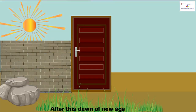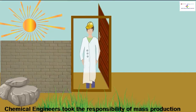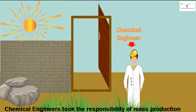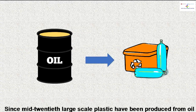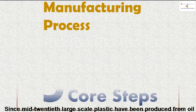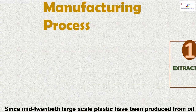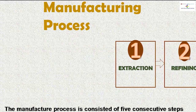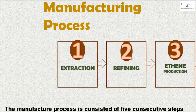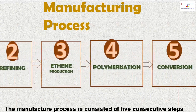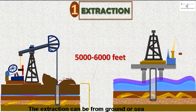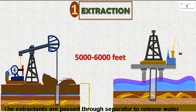The journey of plastic started from natural rubber, and through the vulcanization process, Leo Hendrik Baekeland invented the first man-made synthetic plastic: Bakelite. After this dawn of a new age, chemical engineers took the responsibility of mass production. Since the mid-20th century, large-scale plastics have been produced from oil, and the manufacturing process consists of five consecutive steps.